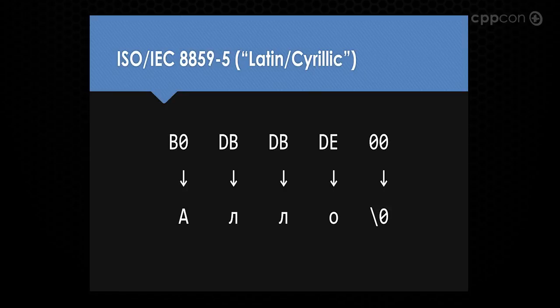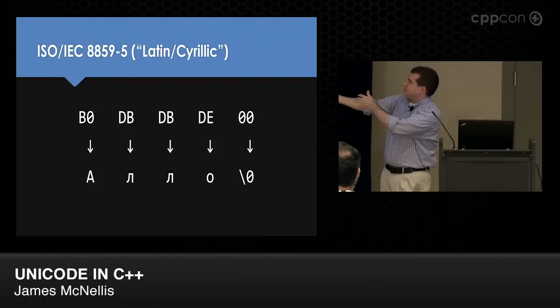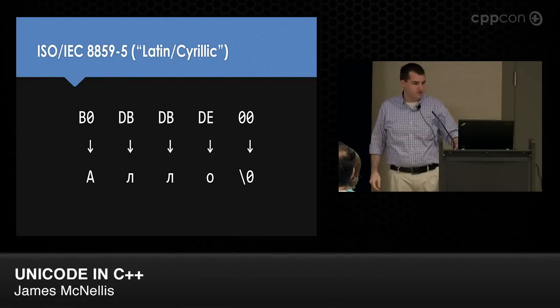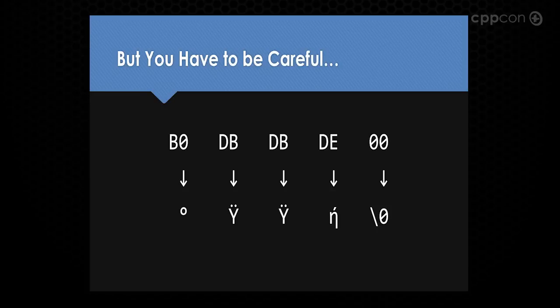There's a bit of a problem: there's not just one encoding. If you have an array of bytes, it doesn't tell you which encoding it's in. If the data happens to be in 8859-5 and you try to decode it in 8859-7 (Latin Greek), you'll get gibberish. This is a very common problem when dealing with multiple text encodings.